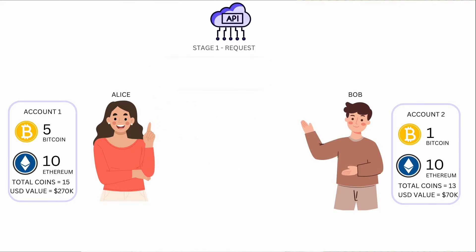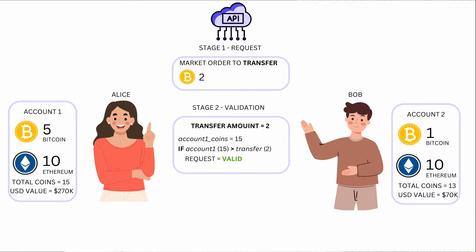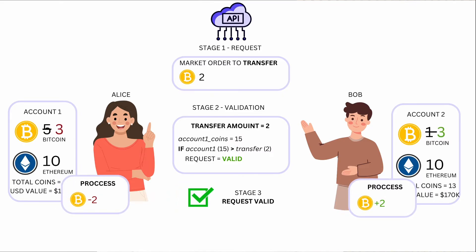So Alice makes a request to send two Bitcoin to Bob. That goes to the API, which does a whole bunch of validation to make sure Alice does have enough money. They calculate how many coins Alice has — she has five Bitcoin and ten Ethereum, which means 15 coins — and she's trying to send two. Alice absolutely has enough coins, so it sends the Bitcoin to Bob. Did you spot the insecure design? The system didn't check how many Bitcoin Alice had — it checked how many coins Alice had.